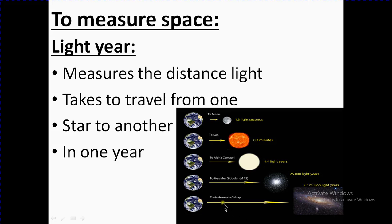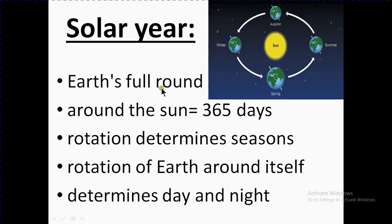Solar year: Earth's full round around the sun equals 365 days.